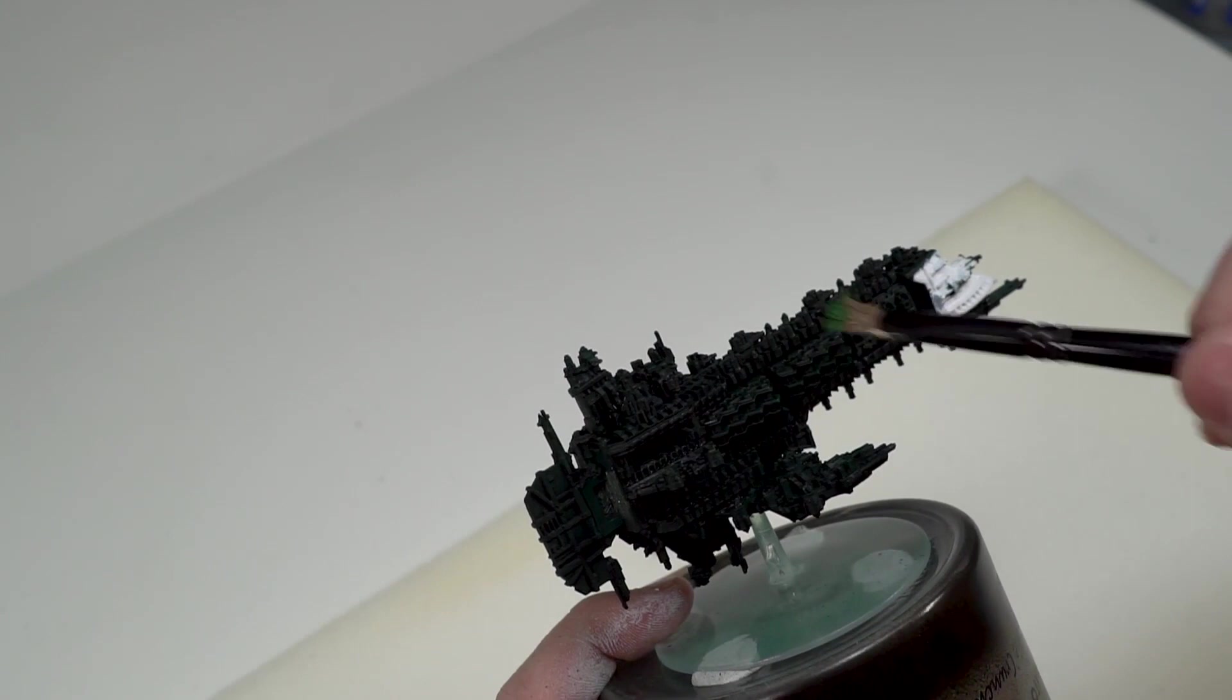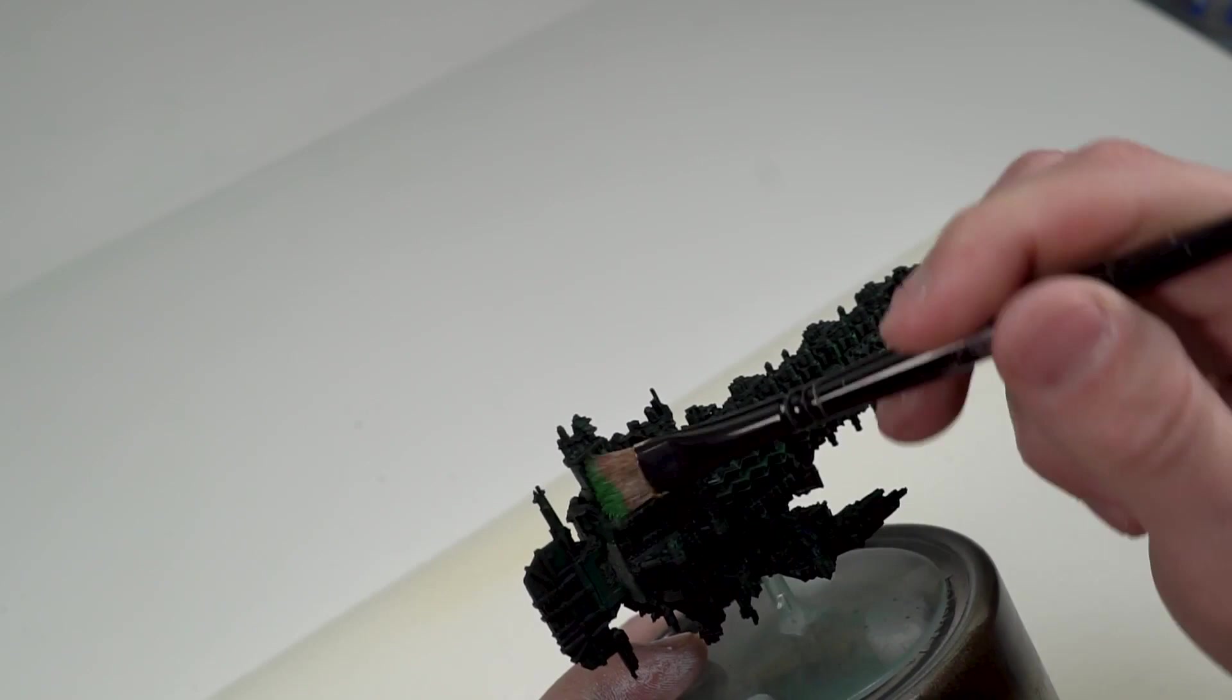Now this model looks very dark, but once the Nuln Oil has actually dried, things do lighten up a little bit, but we're going to be remedying the darkness even further by adding some lighter green dry brushes. So we're going to be starting off with Games Workshop's Warpstone Glow, as you can see here.